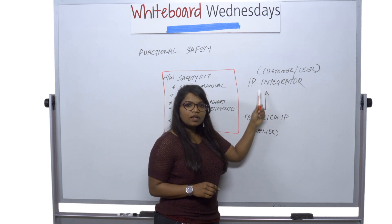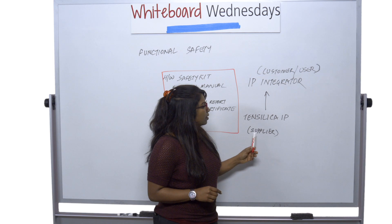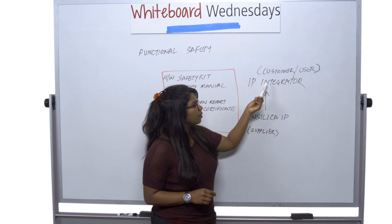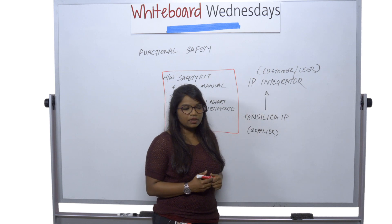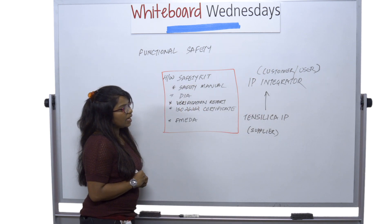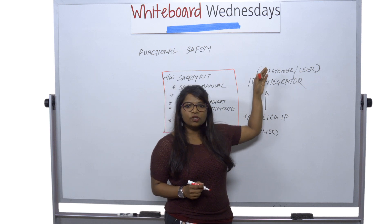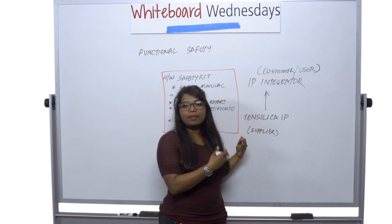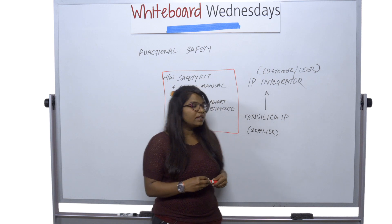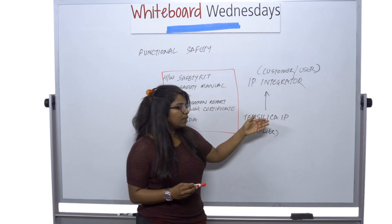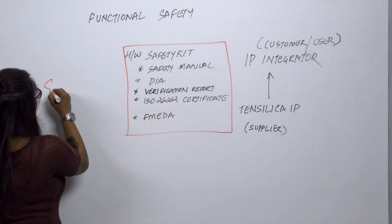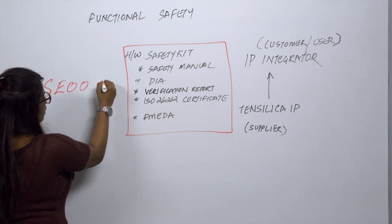In terms of looking at the supply chain, Tensilica is an IP supplier, and we supply the IP to an integrator, customer, or user. While developing this, we typically do not know the end application of where the targeted application is going to be for this IP. So while developing the IP as a safe product, we chose to do what is called a SEooC.